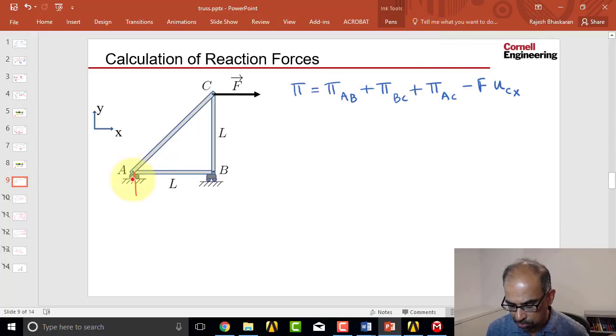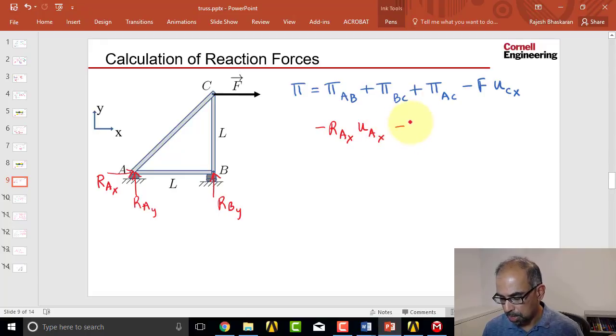So at pin A, you really have an external force, I'll call that R_Ay, reaction at A in the y direction, and there is R_Ax, reaction at A in the x direction. And similarly here, you have a reaction at B in the y direction. These are external forces acting on the pins, so you need to augment the potential energy expression with the contributions from those. So this one will give me minus R_Ax times U_Ax, minus R_Ay times U_Ay, minus R_By times U_By.